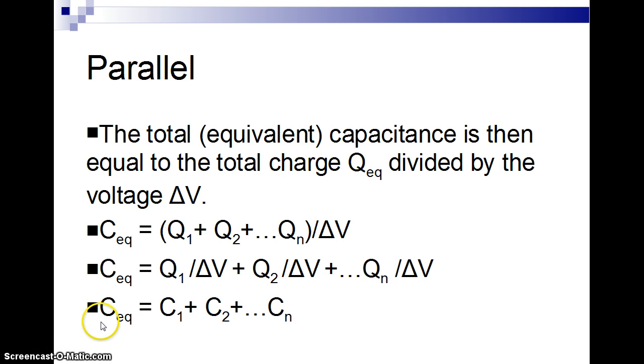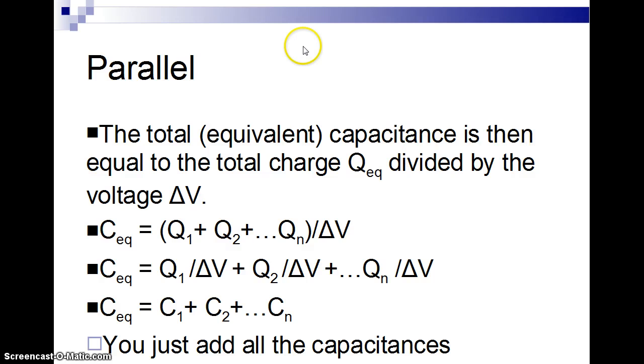When you have the equivalent capacitance of a parallel set of capacitors, all you have to do is add them up. If you had ten one-farad capacitors in parallel, the equivalent capacitance would just be ten farads. Just add them all up. It's the easier way to do things. Then you can do any solving for the overall charge or voltage using that.